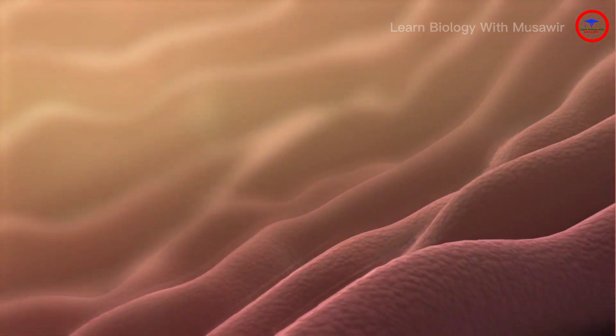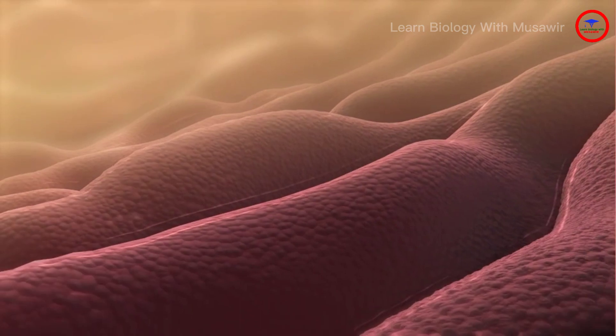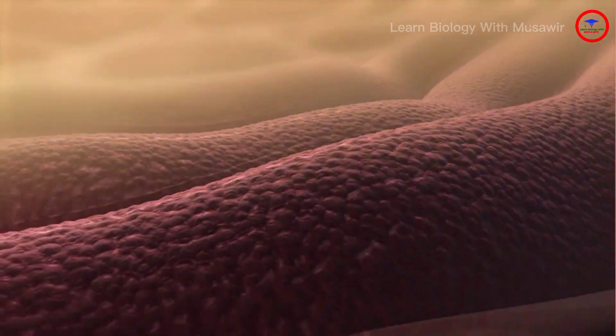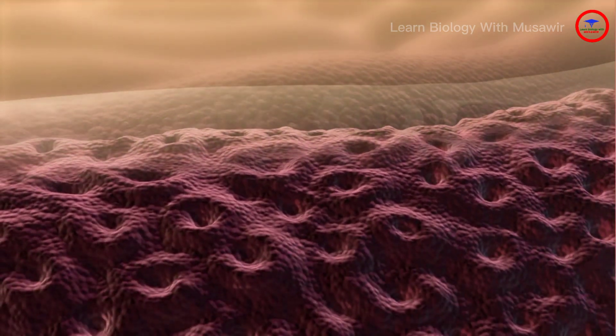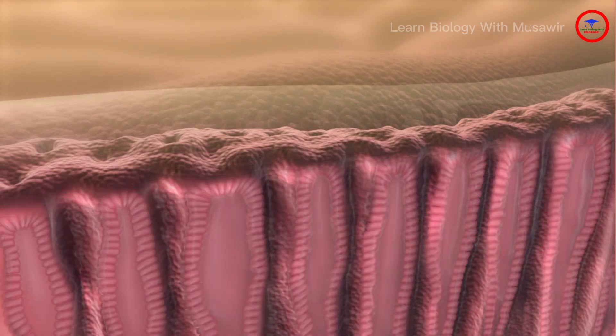These components of gastric juice are secreted through small pits located on the folds of the stomach lining, called rugae. Beneath each pit is a gland lined with epithelial cells responsible for the secretion.